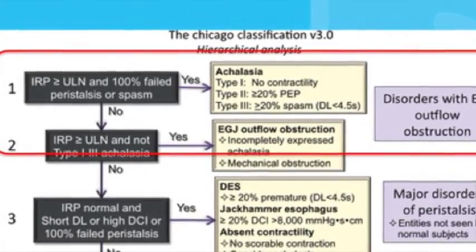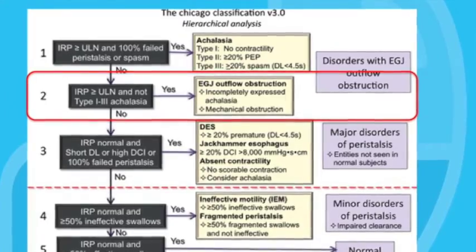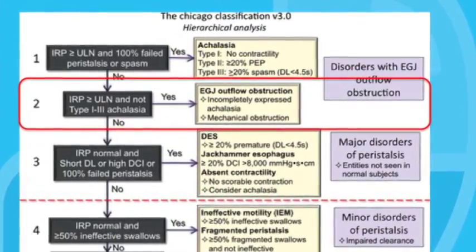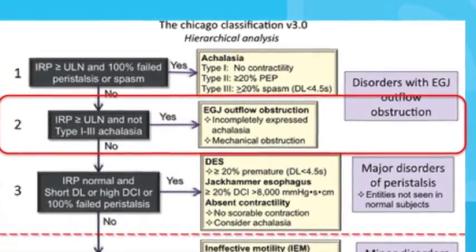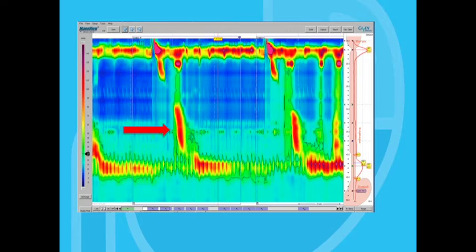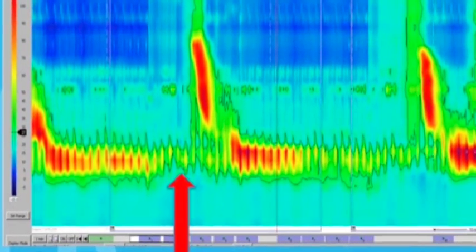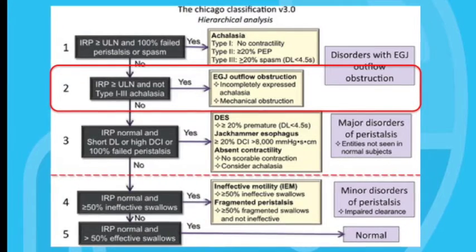What if you have an elevated IRP but normal peristaltic activity in the body of the esophagus? That leads us to step 2. In this situation we again have an elevated IRP of more than 15 millimeters of mercury indicating lack of opening of the EGJ, but the distal latency is longer than 4.5 seconds, indicating that intact peristalsis is present. Here's an example where on initial inspection it appears that peristalsis is present in the esophageal body, though there may be some bolus retention, and the EGJ does not relax with swallows. The distal latency is 4.6 seconds — indicating intact peristalsis — but the IRP is high at 19.5, indicating lack of opening of the EGJ. The Chicago classification calls this EGJ outflow obstruction.